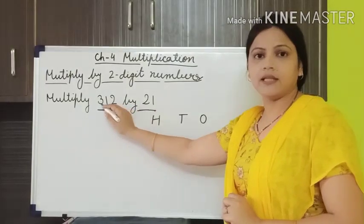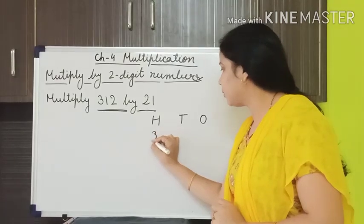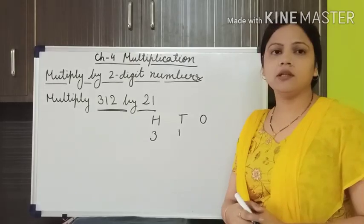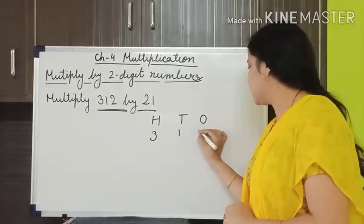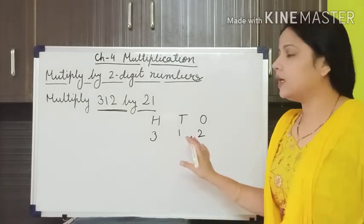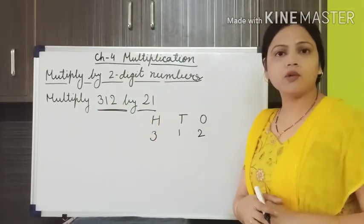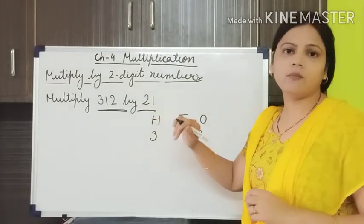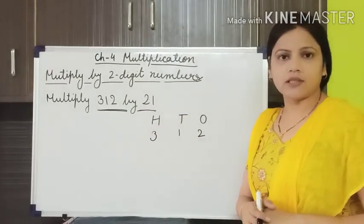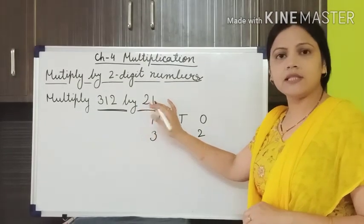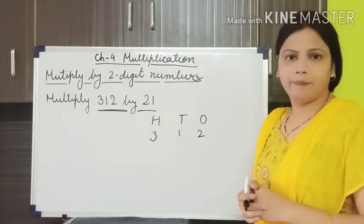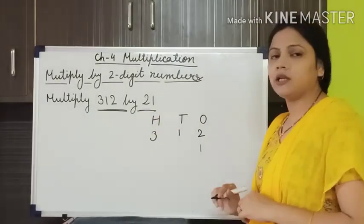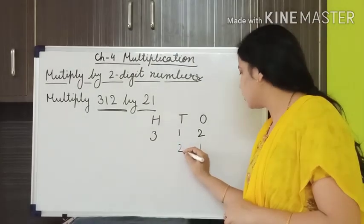In 312, the digit 3 is placed at the 100s position, 1 is placed at the 10s position, and 2 is placed at the 1s position. We have to arrange the numbers according to their places. In 21, the digit 1 is placed at the 1s position and 2 is placed at the 10s position.